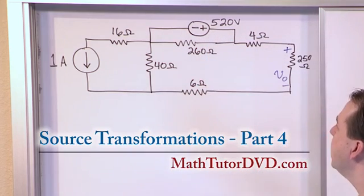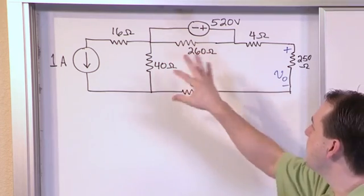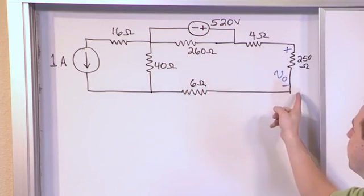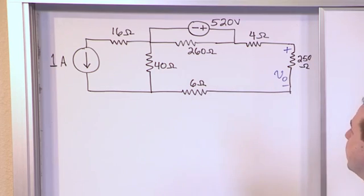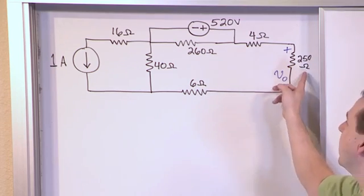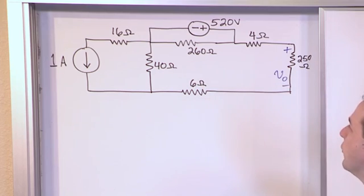We have a 520 volt constant source over there, a resistor network, and what we're trying to really find, the point of this problem, is the voltage, we're calling it V0, that lies across this 250 ohm resistor on the right hand side.